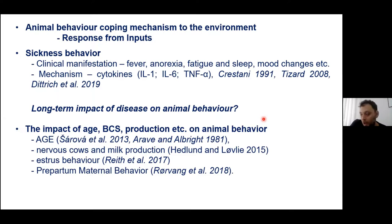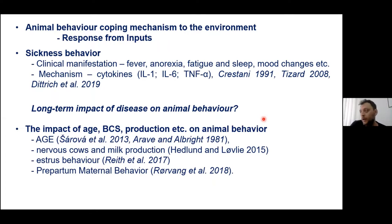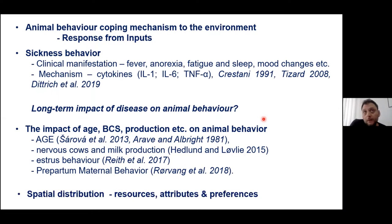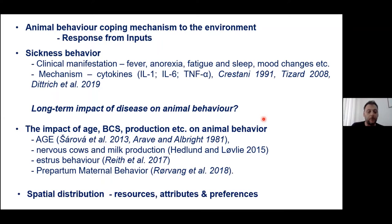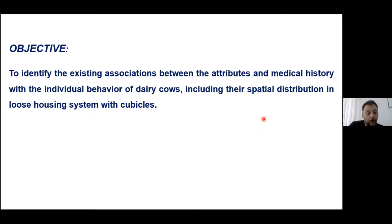Sarwa and others have confirmed that age has an impact on social rank in the herd, that nervous cows produce less milk. We are all aware about estrus behavior, pre-partum maternal behavior, and cow-calf bond behaviors. Also quite interesting is the spatial distribution — in the available space where the animals are moving, depending on resources, attributes, and preferences, the distribution in space is different.